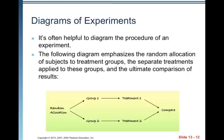It is often helpful to diagram the procedure of an experiment. The diagram emphasizes the random allocation of subjects to treatment groups, the separate treatments applied to these groups, and the ultimate comparison of results. You indicate random allocation of your volunteers, show arrows to group one with treatment one and group two with treatment two, indicate how many individuals are going into each treatment group, and then for the comparison, you always state what you're comparing — whatever that response variable is, such as weight loss or percent body fat.